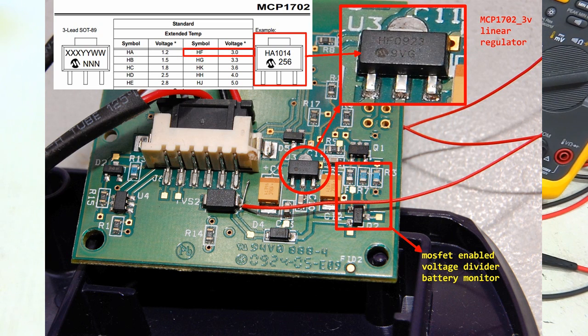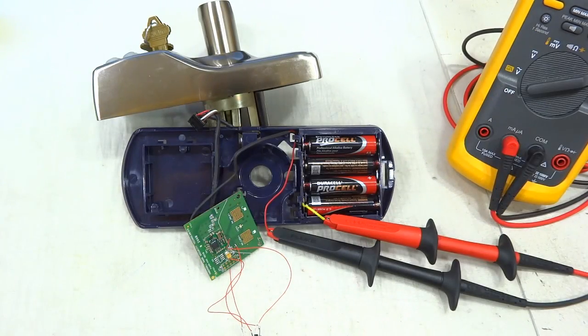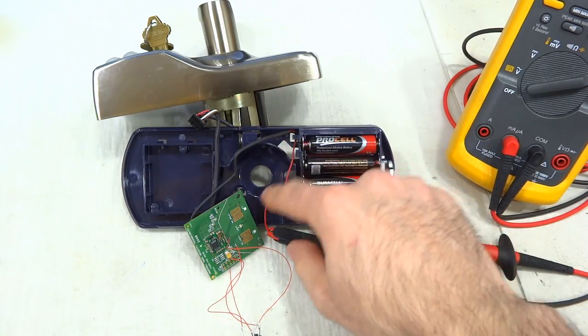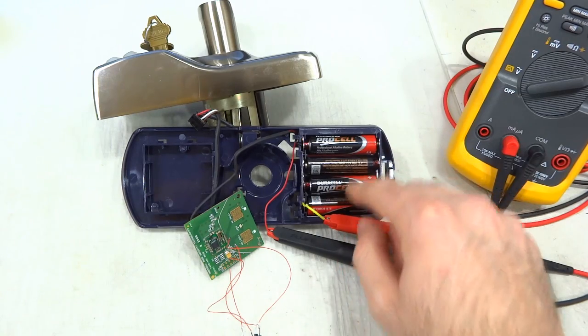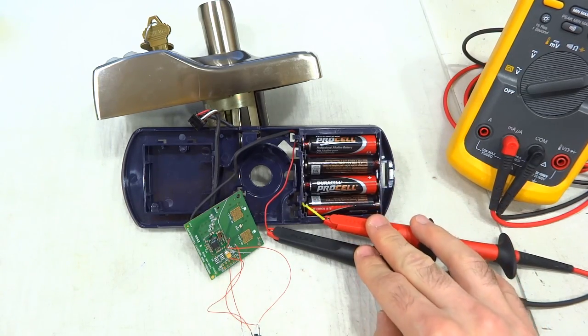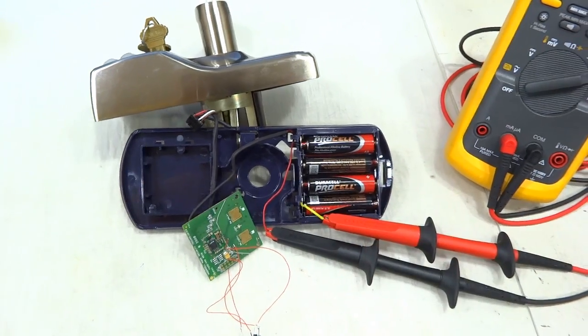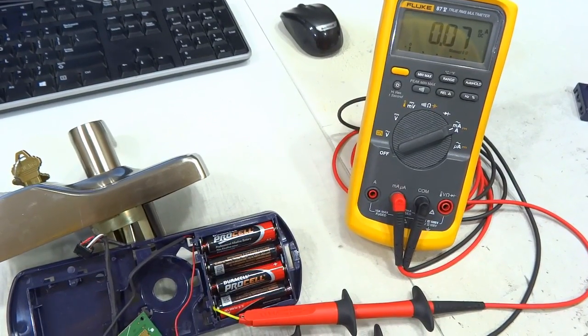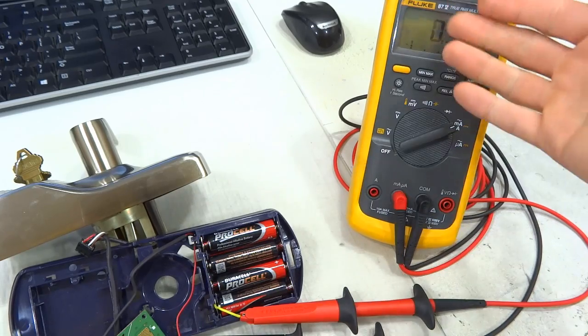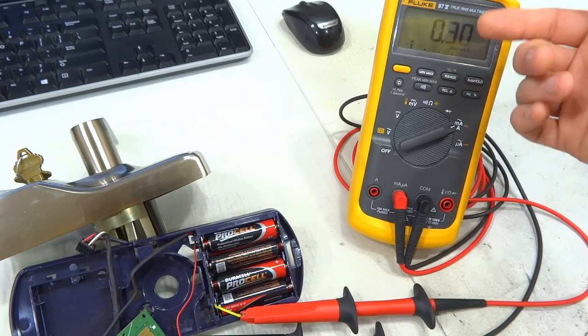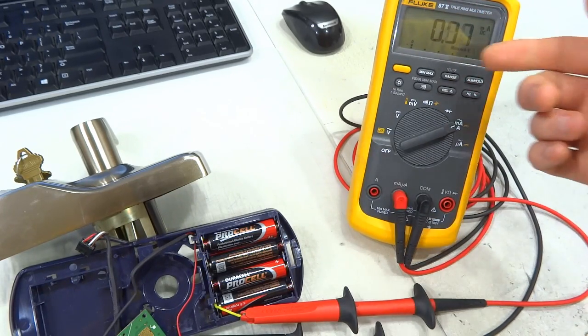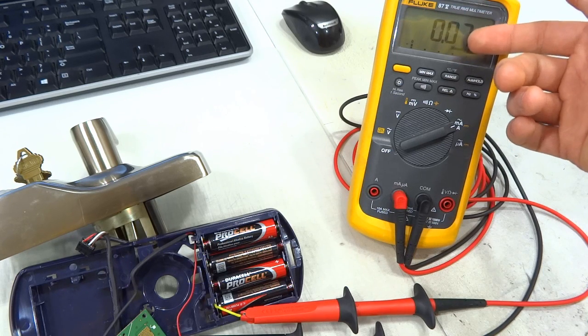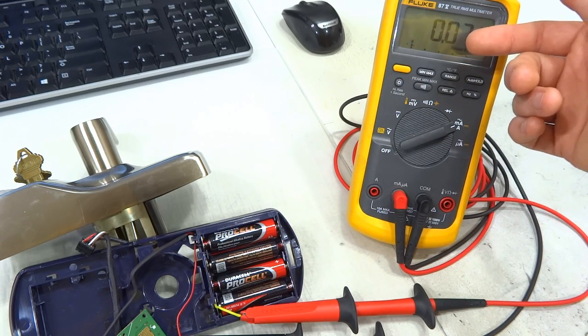Right now the unit is powered up and I cut the wire that comes from the battery plus and added my multimeter in between to be able to measure current. As it is, it uses about 70 to 80 microamps of current, and looks like now it's trying to do something else and sometimes it goes up to about 200 to 300 microamps.